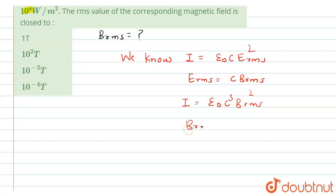So now on solving this value we get B RMS will be equals to square root of I upon epsilon naught C cube.